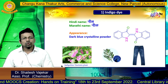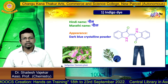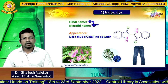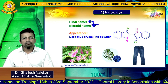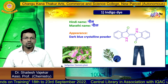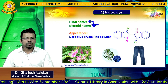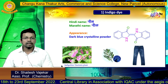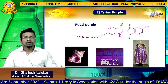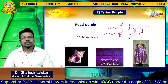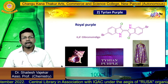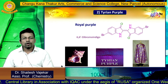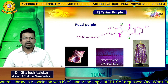Here we have shown a picture of fabric — jeans dyed with denim blue color. This is a major application of indigo dye in the textile industry. The second natural dye is Tyrian purple. This dye is obtained from a kind of shellfish.